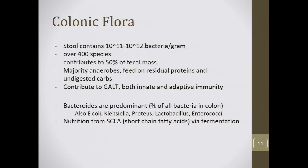The colonic flora: stool contains 10^11 to 10^12 bacteria per gram — a very high number — with over 400 species contributing to 50% of fecal mass by weight. The majority are anaerobes that feed on residual proteins and undigested carbohydrates, contributing to the GALT and both innate and adaptive immunity. Bacteroides are the predominant species — two-thirds of all colonic bacteria — along with gram-negative aerobes such as E. coli, Klebsiella, Proteus, Lactobacillus, and Enterococci.